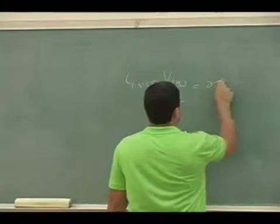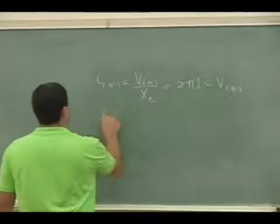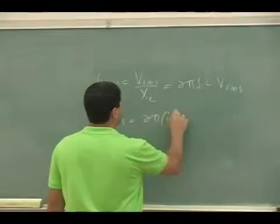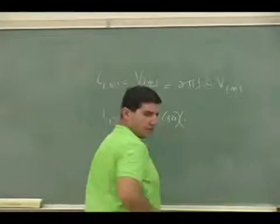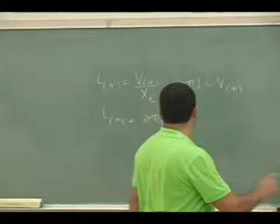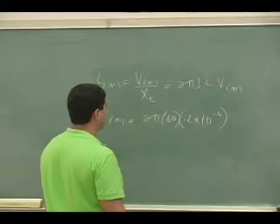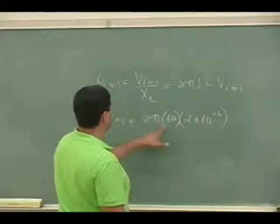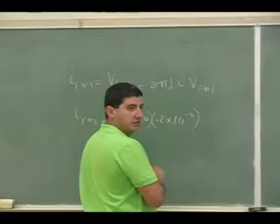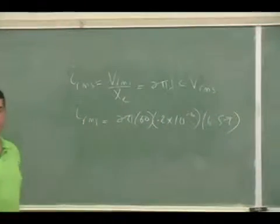So our I_rms should equal 2π times 60 times—the capacitance is 0.22 microfarads—times that times V_rms, which is 6.57. So that's what the ammeter is going to measure.